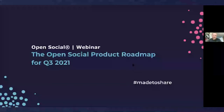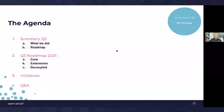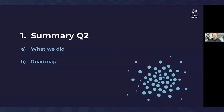Welcome everybody to the meeting, and also to those joining afterwards, as I know most people do. We're going to go through the social roadmap for Q3. As usual, I'm going to start with a summary of what we've done, explain the Q2 roadmap — where we are and what we did — and then move forward to the Q3 roadmap, split into core, extension, and the decouple project. Afterwards there's room for Q&A. For everybody joining afterwards, feel free to leave comments in the community talks section.